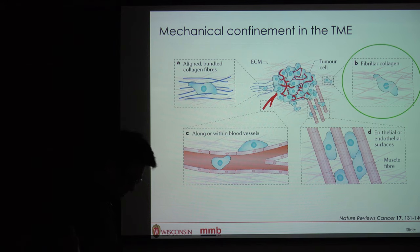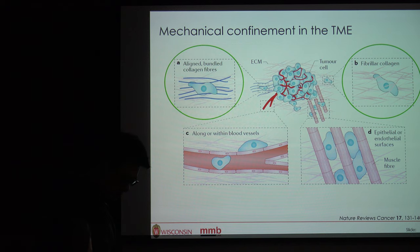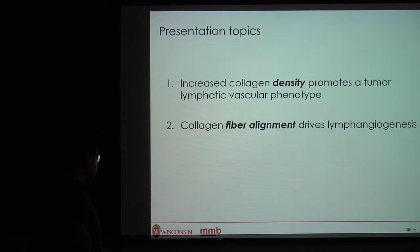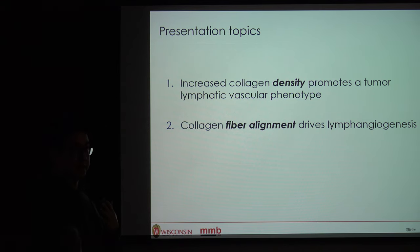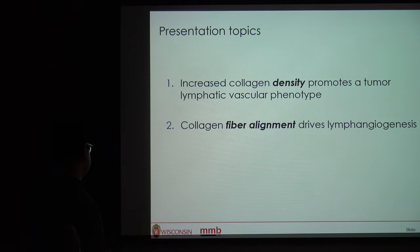So what I will present today is looking at density and fiber alignment and how those contribute to cancer metastasis. Our hypotheses are: first, that increased collagen density promotes a tumor lymphatic vascular phenotype and potentially contributes to lymphatic metastasis; and second, that collagen fiber alignment is a potent driver of lymphangiogenesis and potentially tumor lymphangiogenesis. Karina is leading the first topic, so I'll highlight key data before moving on to fiber alignment.